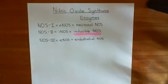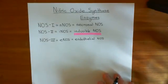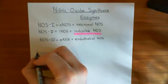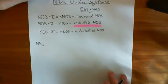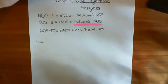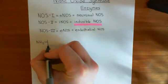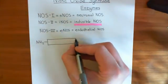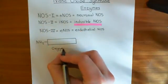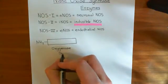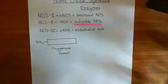Now let's talk about the actual structure of these proteins and how they form functional enzymes which create nitric oxide. These proteins are a long sequence of amino acids — I'll draw out the major regions rather than every single amino acid. The first region at the amino terminus is known as the oxygenase domain. At the amino terminus of each of these proteins, you have a domain known as the oxygenase domain, which we'll denote in blue.